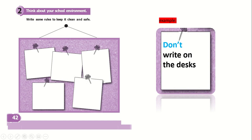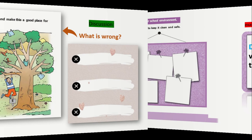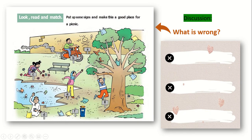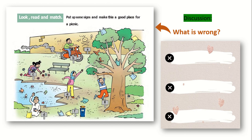Now look at this page on your class book, page number 58. Look at this place — wow, it is horrible! Read and match: put up some signs and make this a good place for a picnic. Can you give signs for these children to make this place clean? Look at this girl — what can we say to her? 'Don't pick the flowers' — well done! 'Don't write on the walls' — excellent! 'Don't climb the trees' — excellent!